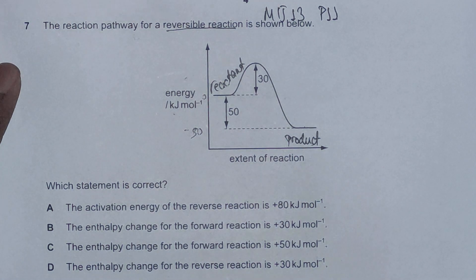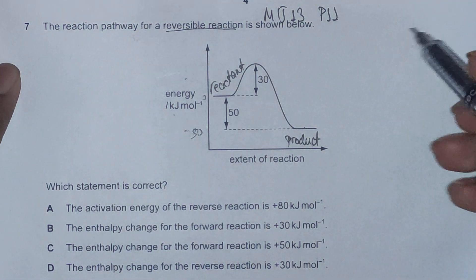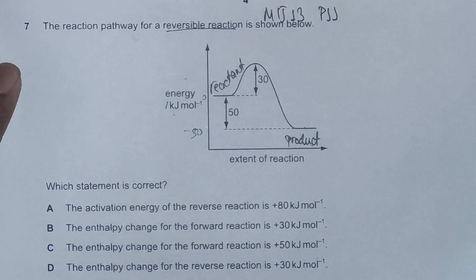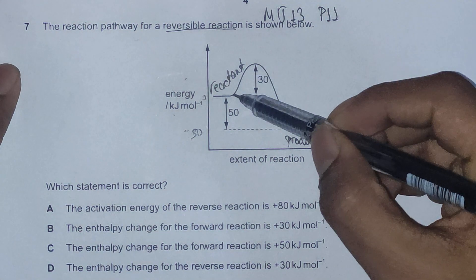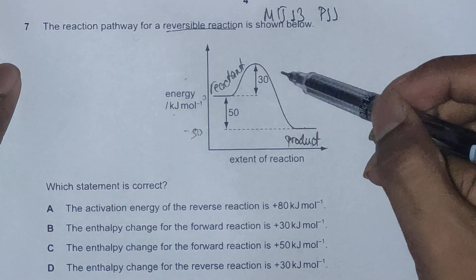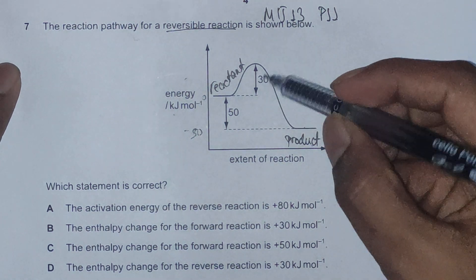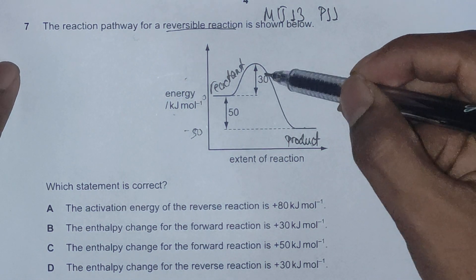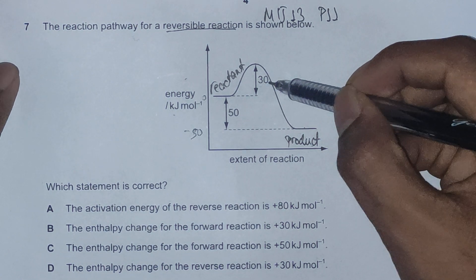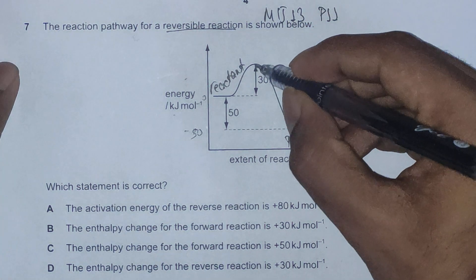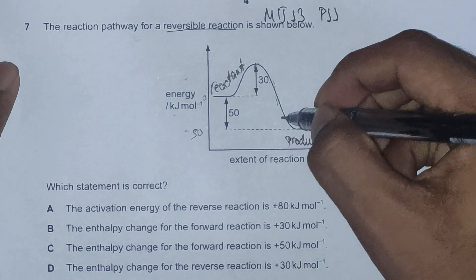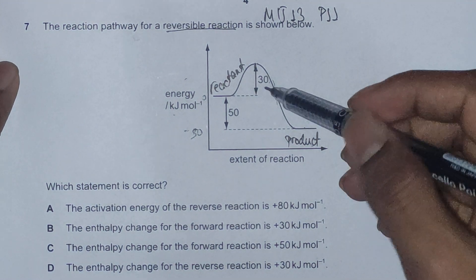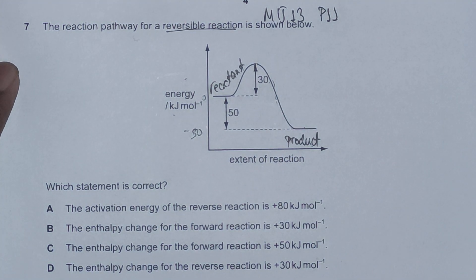Another piece of information the energy diagram gives is activation energy, which is the minimum energy the reactants should possess to give the product. The peak is the activation energy barrier. So if the reactants gain 30 kilojoules per mole, they can pass this level and form the product. Therefore, the activation energy for the forward reaction is 30 kilojoules per mole.